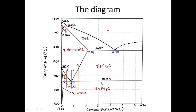Here, this line shows the eutectoid line, and this line shows the eutectic line. This is the eutectoid point and this is the eutectic point. It is known as the eutectoid point because at higher temperature we have one solid — gamma austenite — which gets converted into two different solids after 727 degrees Celsius on cooling. It is known as the eutectic point because on cooling we get liquid transforming into two types of solids.